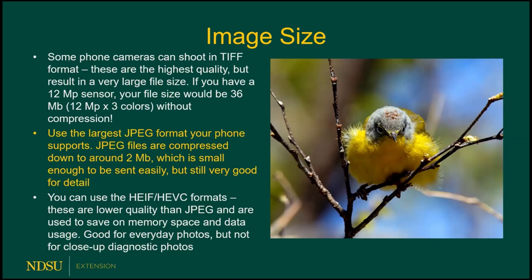Enter the JPEG format. All digital cameras are capable of storing images in JPEG, which takes that big TIFF format and compresses it down to a small size. In this case, that 36 megabytes is compressed down to around two megabytes — a file size small enough to be sent easily, but that still retains very good detail. The image on the right is about two megabytes — it's a JPEG of a Nashville warbler. You can see the detail of the feathers, the yellow around the body, the rusty patch on the crown, and even the grays on the head. It's a very good photo, small enough to send via email or text.